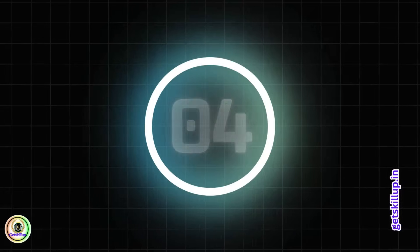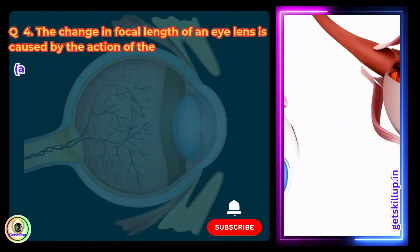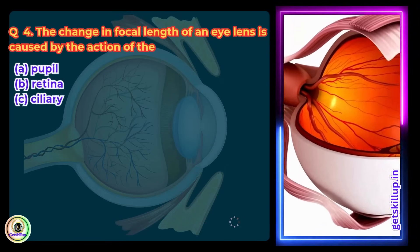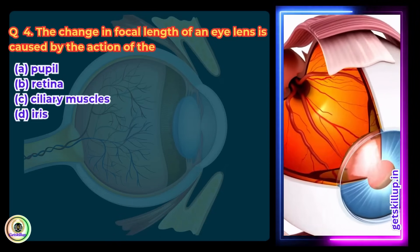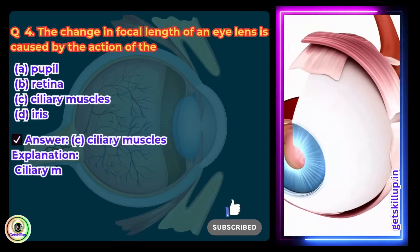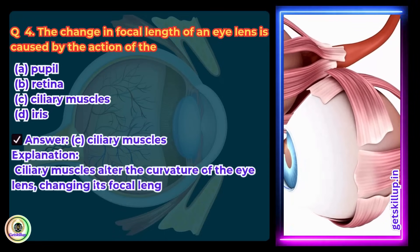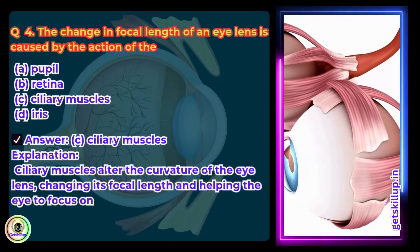Question 4. The change in focal length of an eye lens is caused by the action of the: A. Pupil, B. Retina, C. Ciliary muscles, D. Iris. Answer: C. Ciliary muscles. Explanation: Ciliary muscles alter the curvature of the eye lens, changing its focal length and helping the eye to focus on near or distant objects.